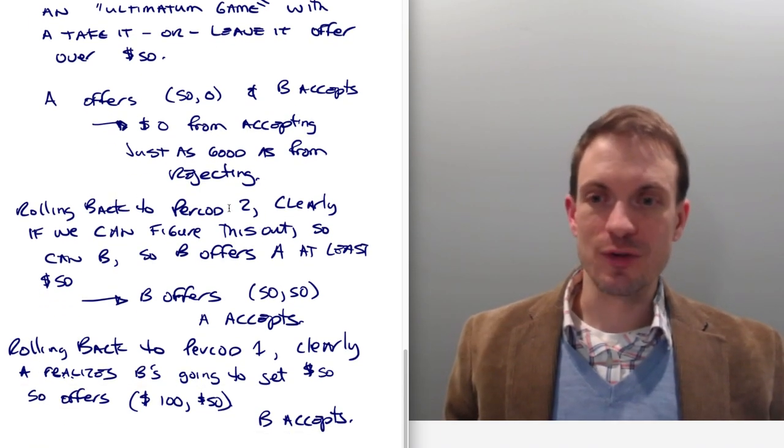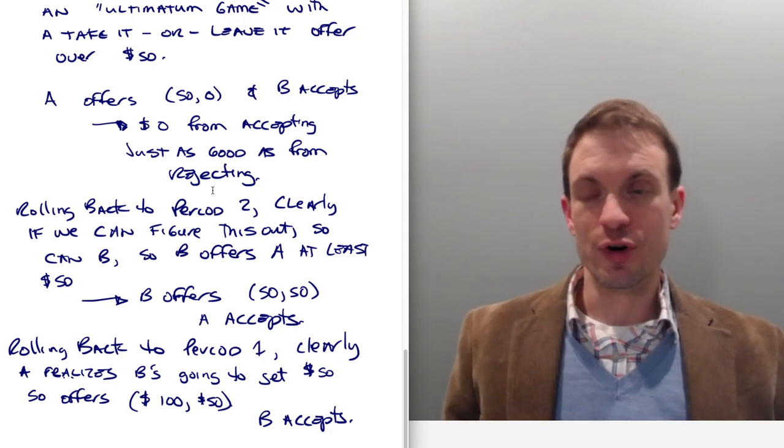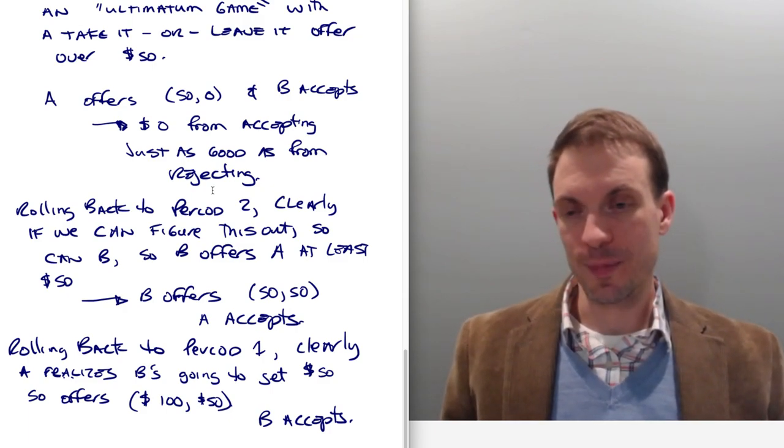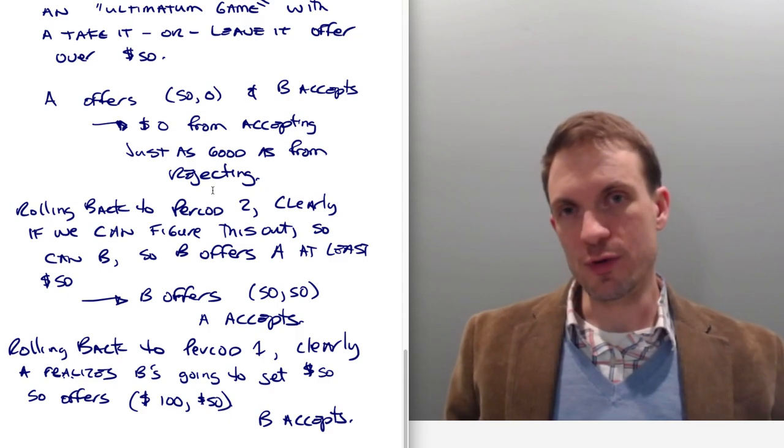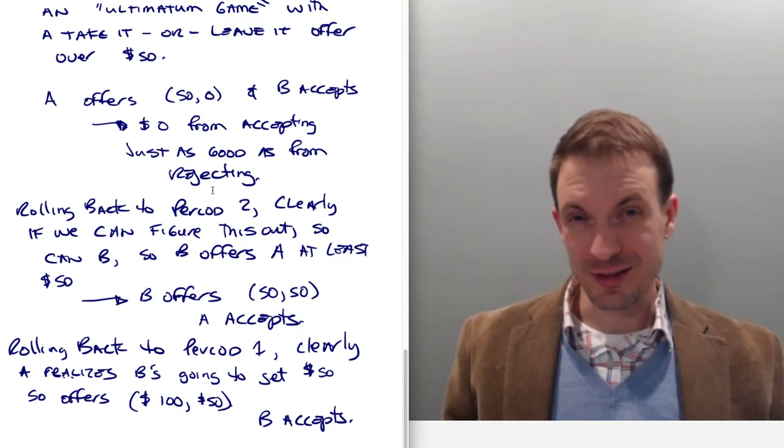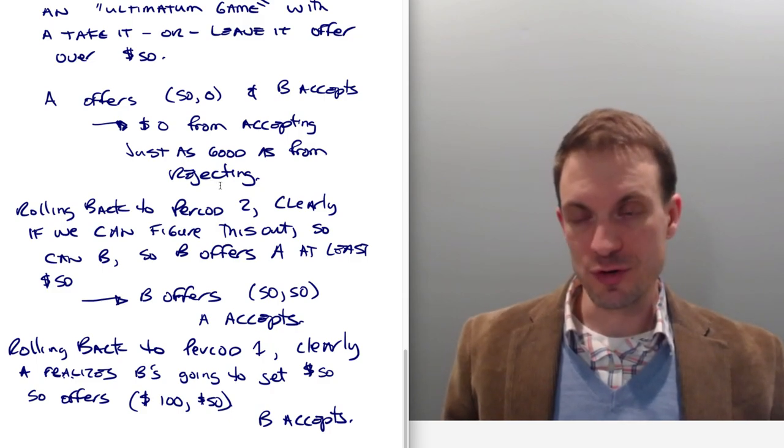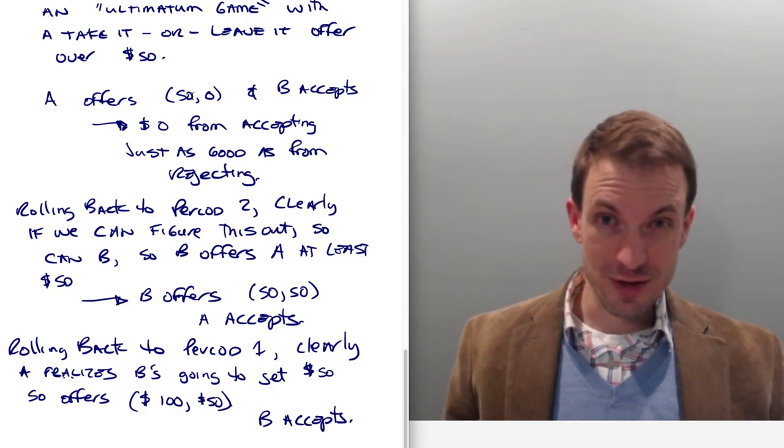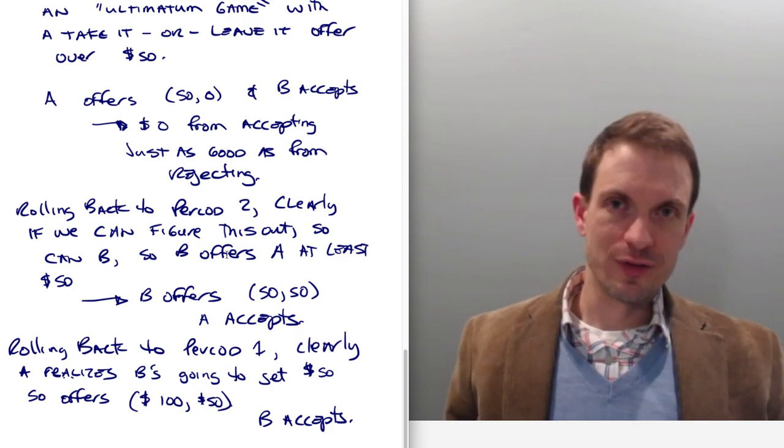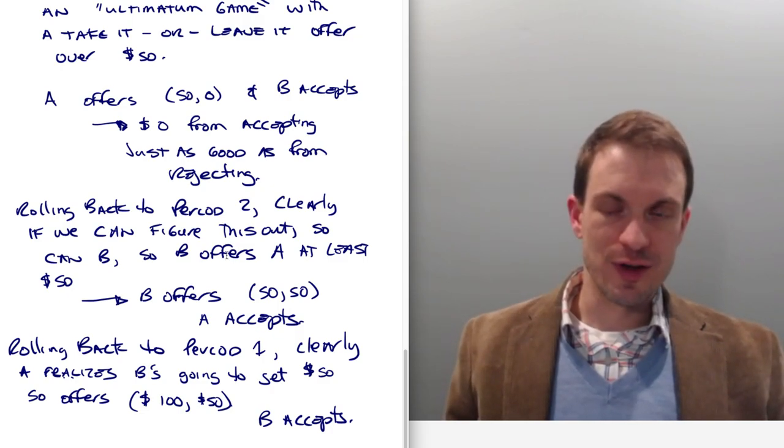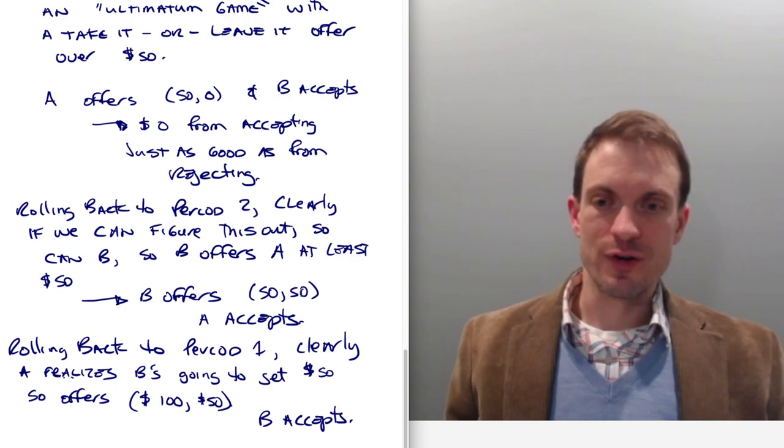Okay, so rolling back to period two, clearly, if we can figure this out, we're expecting presumably B can as well. So B is going to realize that they need to offer A at least $50, because otherwise A is going to reject in period two, because A is going to get their 50 in period three. So there was $100 available, B has to give A at least 50. And so B is going to offer 50 to A, 50 to A and keep 50 for themselves. The second payoff goes to B. A will accept.